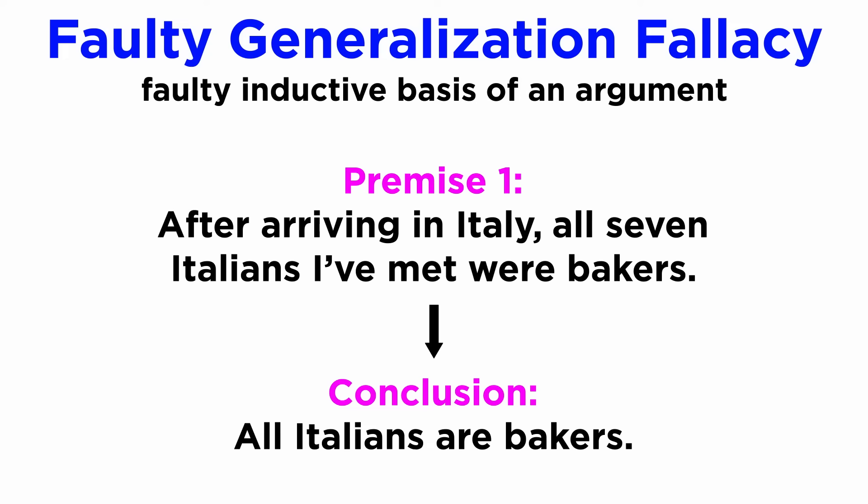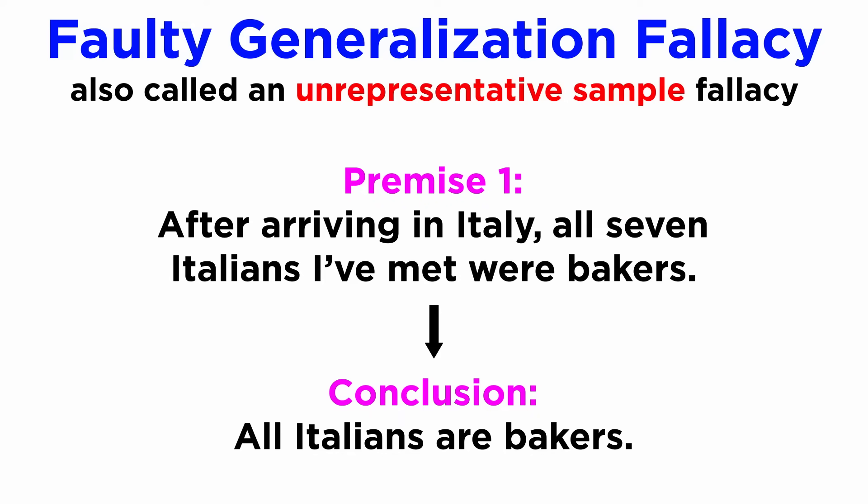There are also slightly different informal versions of this fallacy, such as the faulty generalization fallacy, occurring by a faulty inductive basis of an argument instead of a purely definitional one. An example would be: after arriving in Italy, all seven Italians I've met were bakers, therefore all Italians are bakers. The limited experiences of a single person — what is called anecdotal evidence — are not proper evidence enough for such a bold universal claim, thus rendering the argument invalid. This can also be called an unrepresentative sample fallacy in more statistical terms, since its small size cannot properly represent the universality it claims.